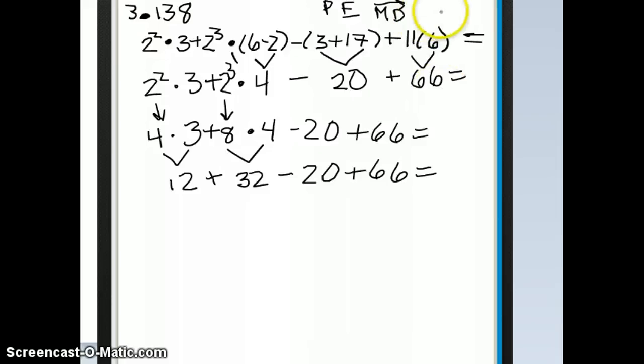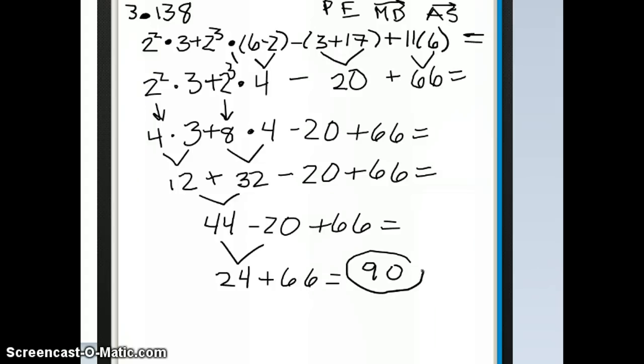And our last step following the order of operations is to do addition and subtraction in the order that they come from left to right. So we'll go left to right. 12 plus 32 is 44. Then copy the rest of the problem just like it is. Left to right, 44 minus 20 is 24. 24 plus 66, our very last step, equals 90. So our answer in this case is 90.